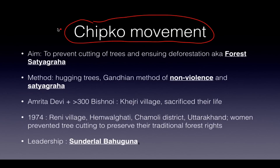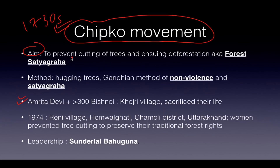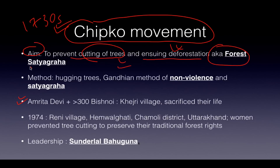The Chipko Movement is an example of a conservation movement. It started in 1730 when Amrita Devi along with 363 Bishnois hugged the green Khejdi plants in Khejdi village. The local ruler had ordered them to cut the trees, but these people hugged the trees and were cut along with them — this is considered a supreme sacrifice in the protection and conservation movement. The aim was to prevent the cutting of trees and the ensuing deforestation. It is also called Forest Satyagraha, using the Gandhian method of non-violence.